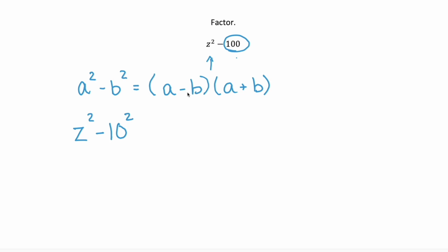For difference of squares, we get (z - 10)(z + 10).